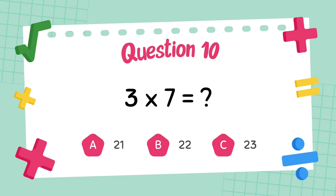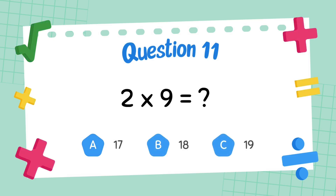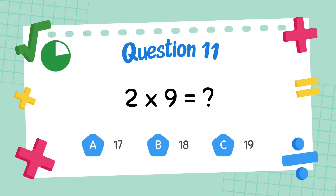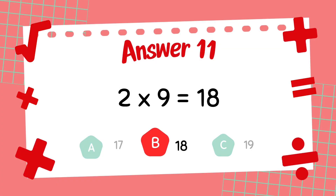What is 6 multiply 7? The answer is 21. What is 2 multiply 9? The answer is 18.